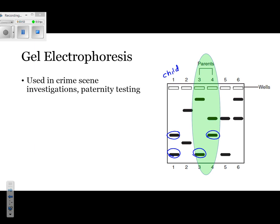For potential child number 2, this band doesn't match up with lanes 3 or 4. Based on that evidence alone, you could say that this person is not a child of those two parents. For potential child number 5, the bands match up, indicating this person is a child of these two people. For potential child number 6, the bands also match up. That means this couple has 3 children: children 1, 5, and 6. Child 2 is not their child because the banding patterns do not match.